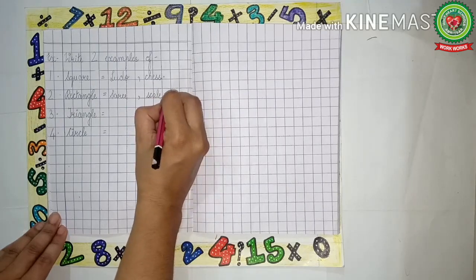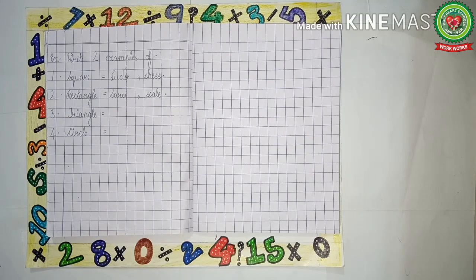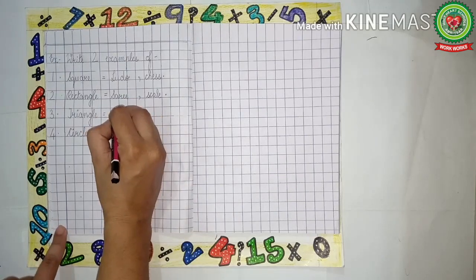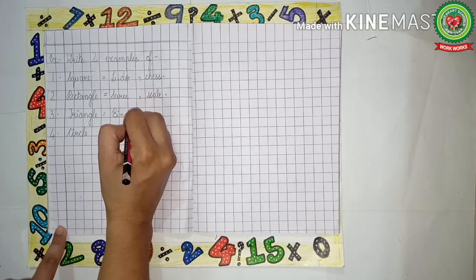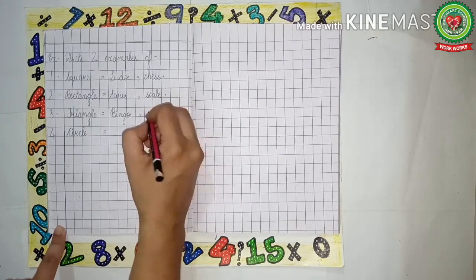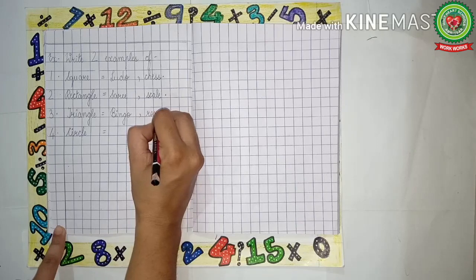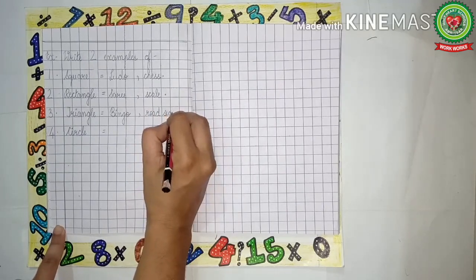Number three is triangle. Two examples of triangle are bingo — B-I-N-G-O — comma, road sign — R-O-A-D S-I-G-N.